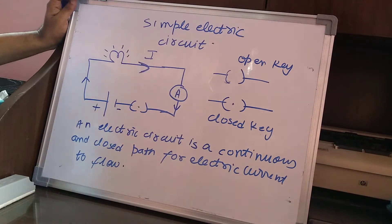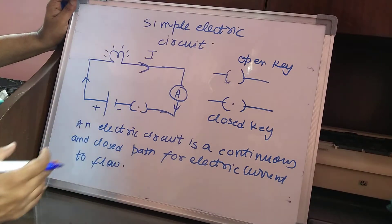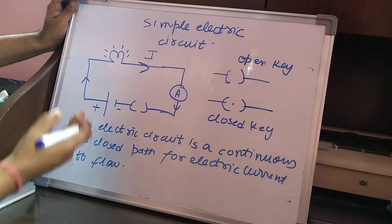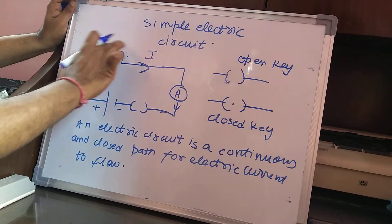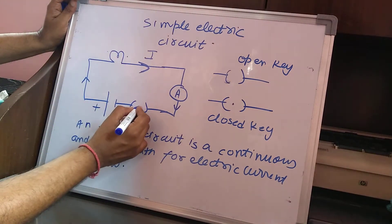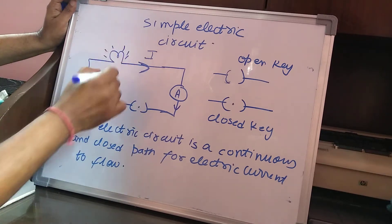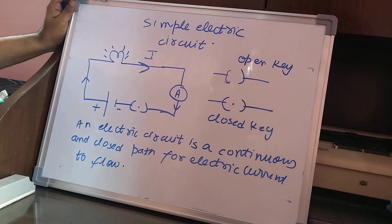We can have two types of electrical circuits: an open electric circuit and a closed electric circuit. If the key is open, then we have an open electric circuit, so the lamp will not be glowing. If we switch the key on, the lamp starts glowing, so it becomes a closed electric circuit.